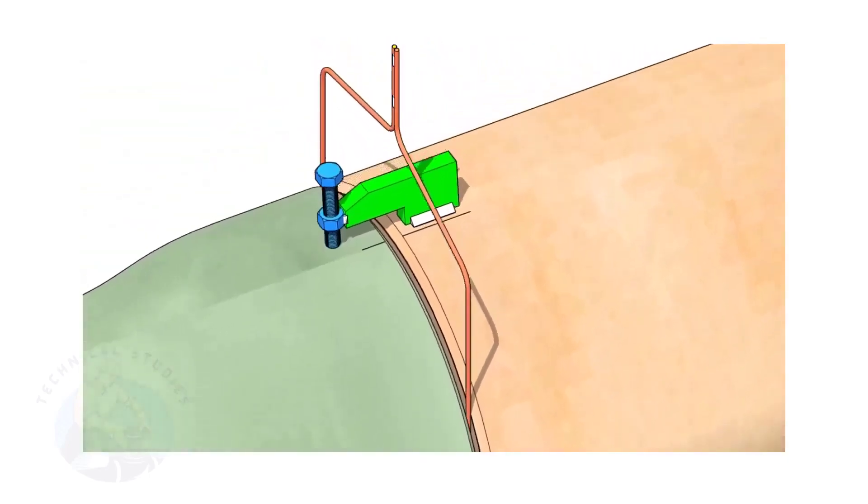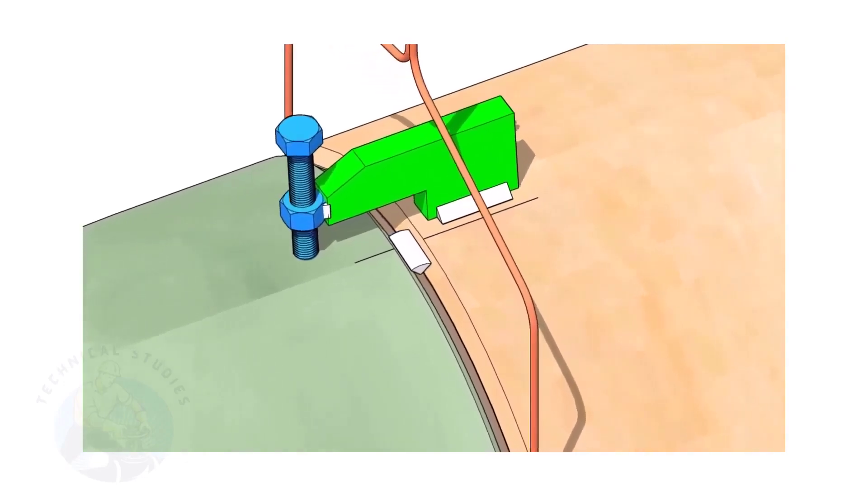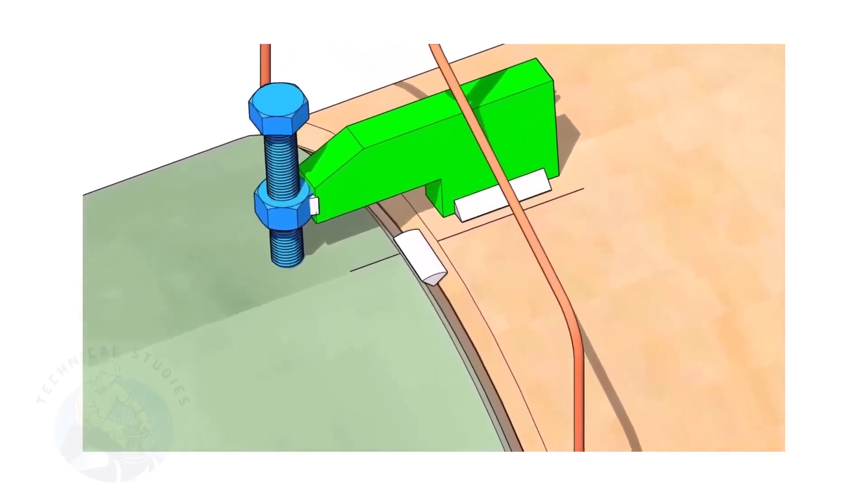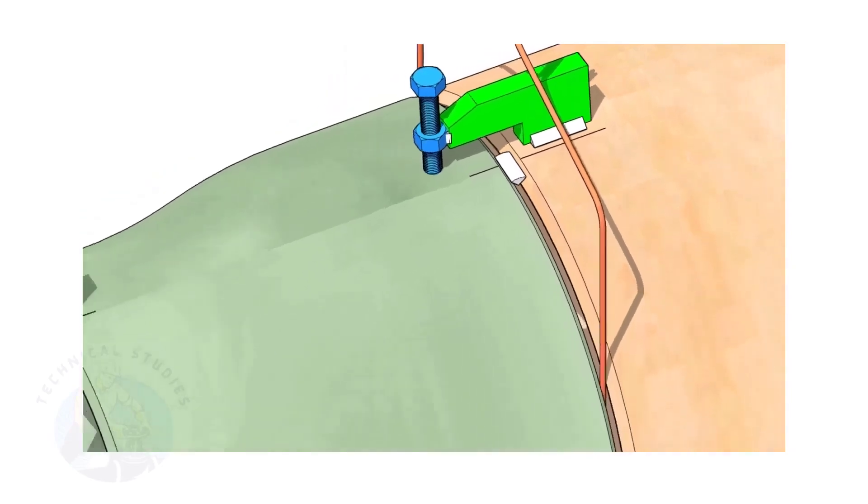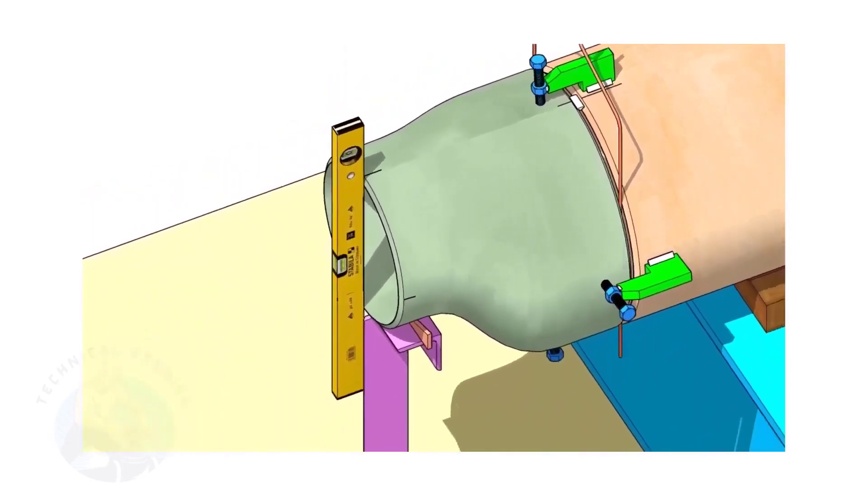Now, tack weld on the top side of the joint. Correct the levelness of the outer face of the reducer.